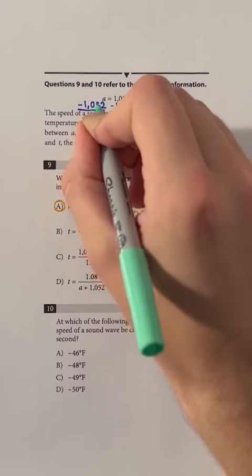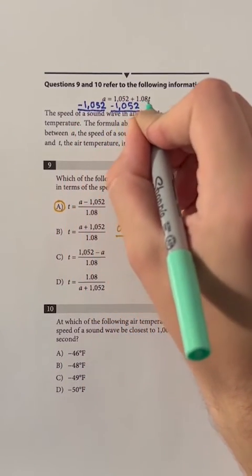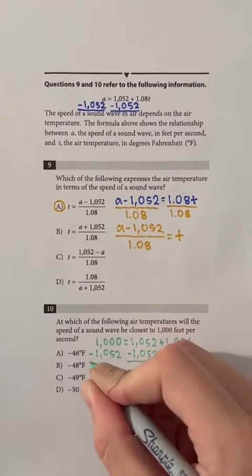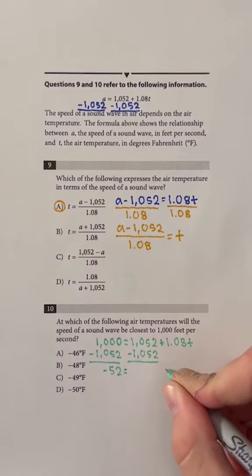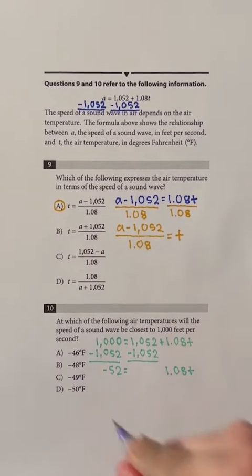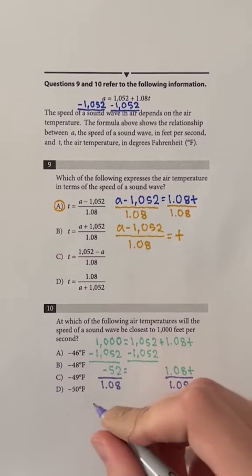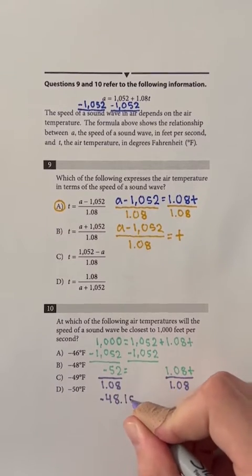Let's substitute 1000 for A, the speed of a sound wave, and then solve for T. When we subtract 1052 on both sides of the equation, we will get negative 52 equals 1.08T. Lastly, when we divide by 1.08 on both sides of the equation, we see that T is approximately negative 48.15.